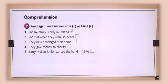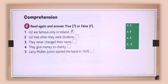Let's check the answers. U2 met when they were students — true. They never changed their name — false. They give money to charity — true. And Larry Mullen Jr. started the band in 1976 — true.